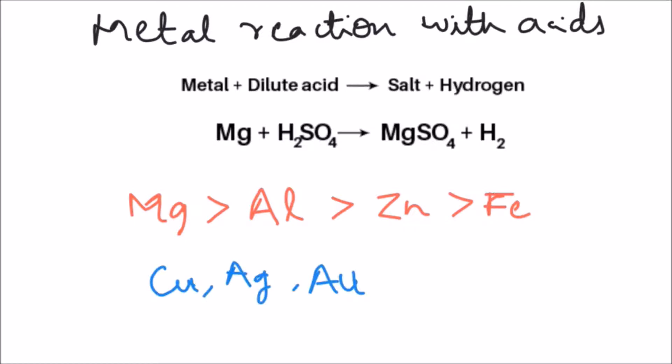Copper, silver and gold do not react with acid at all, whereas gold gets dissolved in aqua regia which is a mixture of concentrated HCl and HNO3 in a 3 to 1 ratio.